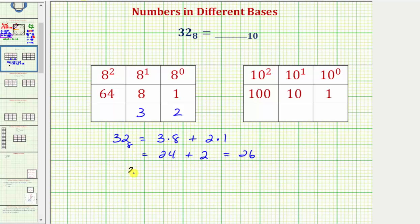So this tells us that 32 base eight is equal to 26 base 10. So again, our answer is 26.